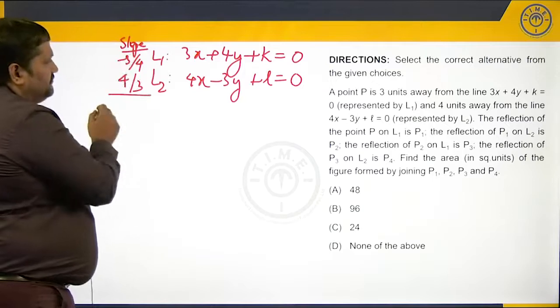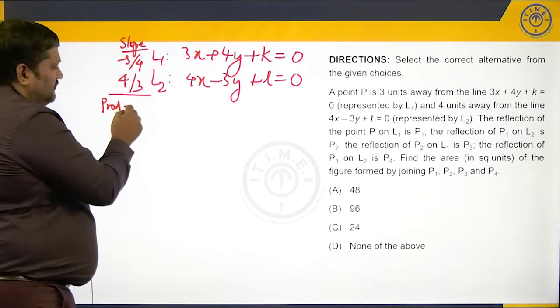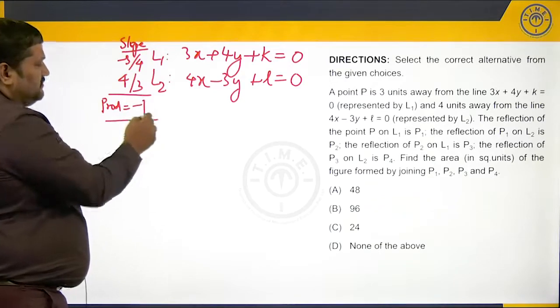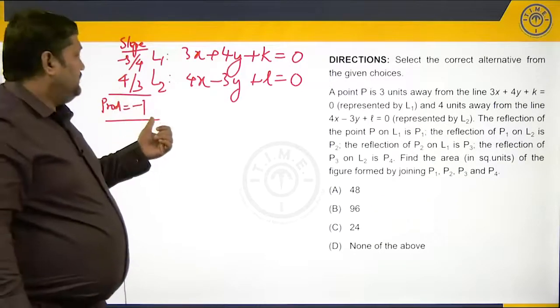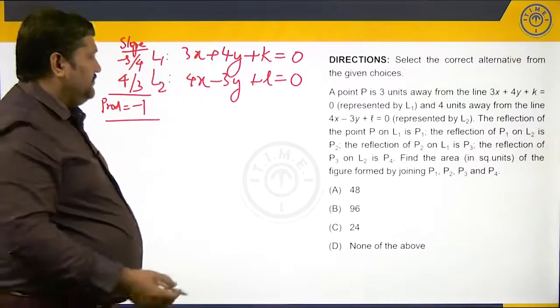The product of the slopes is minus 1. If the product of the slopes is minus 1, it is an indication that the lines are perpendicular.